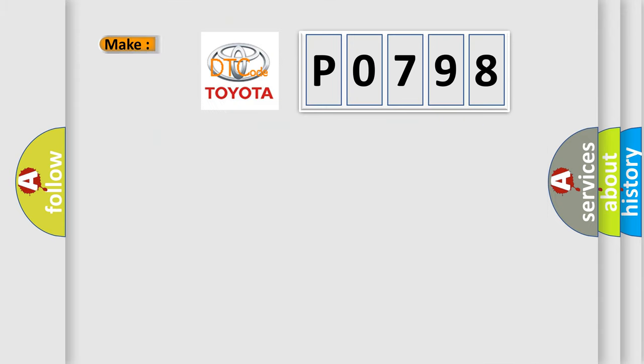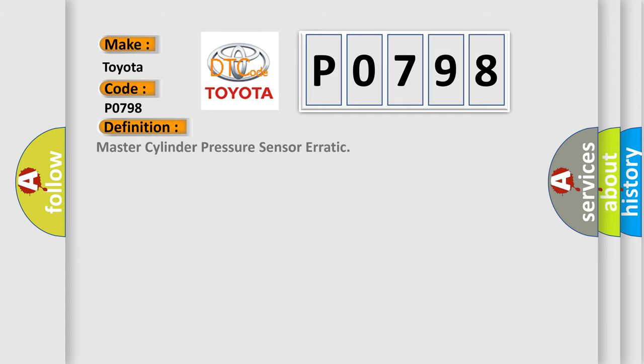We now know in what way the diagnostic tool translates the received information into a more comprehensible format. The number itself does not make sense to us if we cannot assign information about what it actually expresses. So, what does the diagnostic trouble code P0798 interpret specifically for Toyota car manufacturers? The basic definition is: Master cylinder pressure sensor erratic.